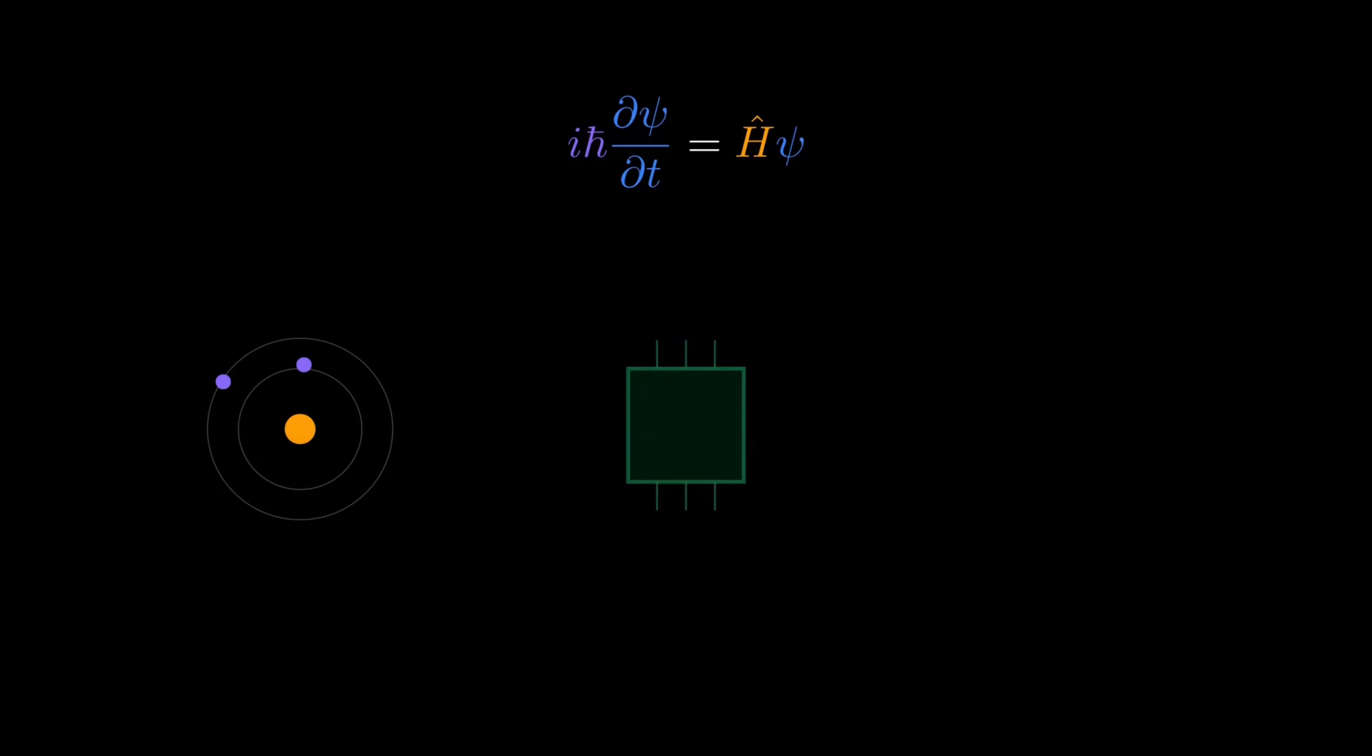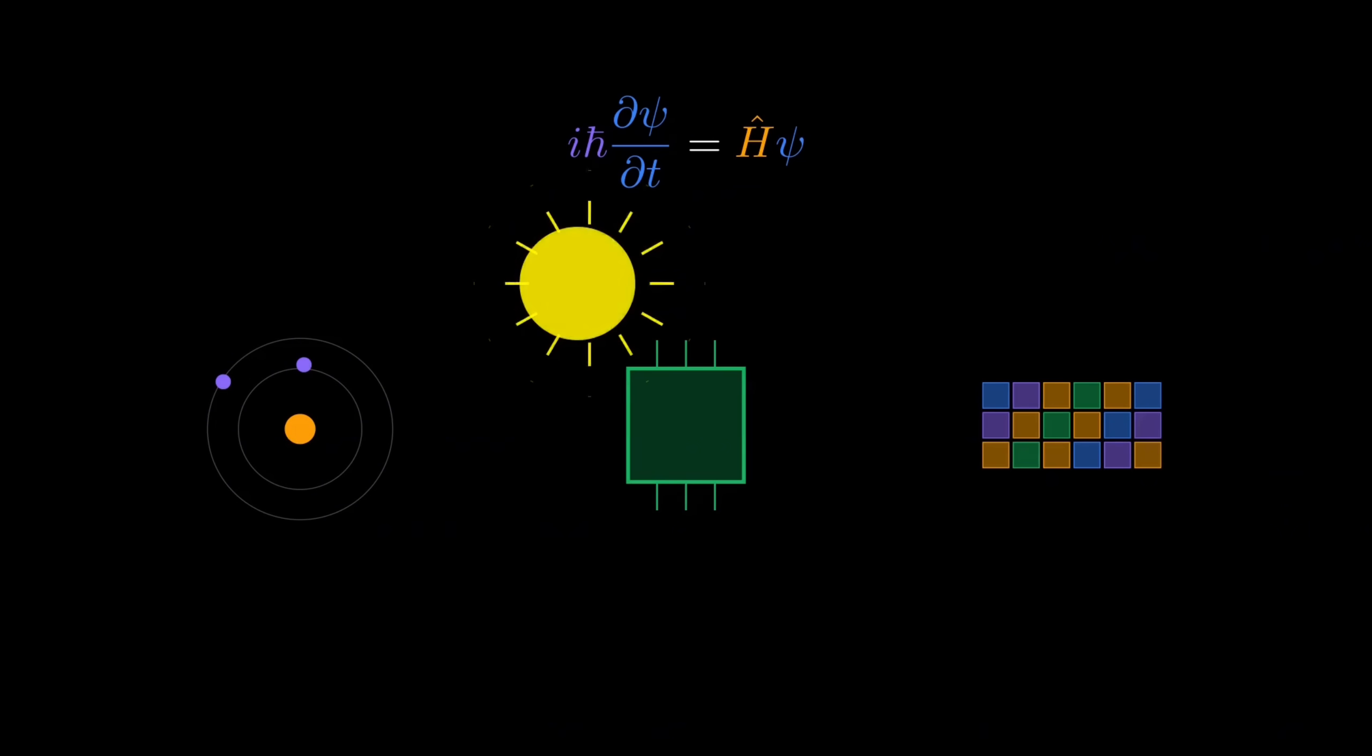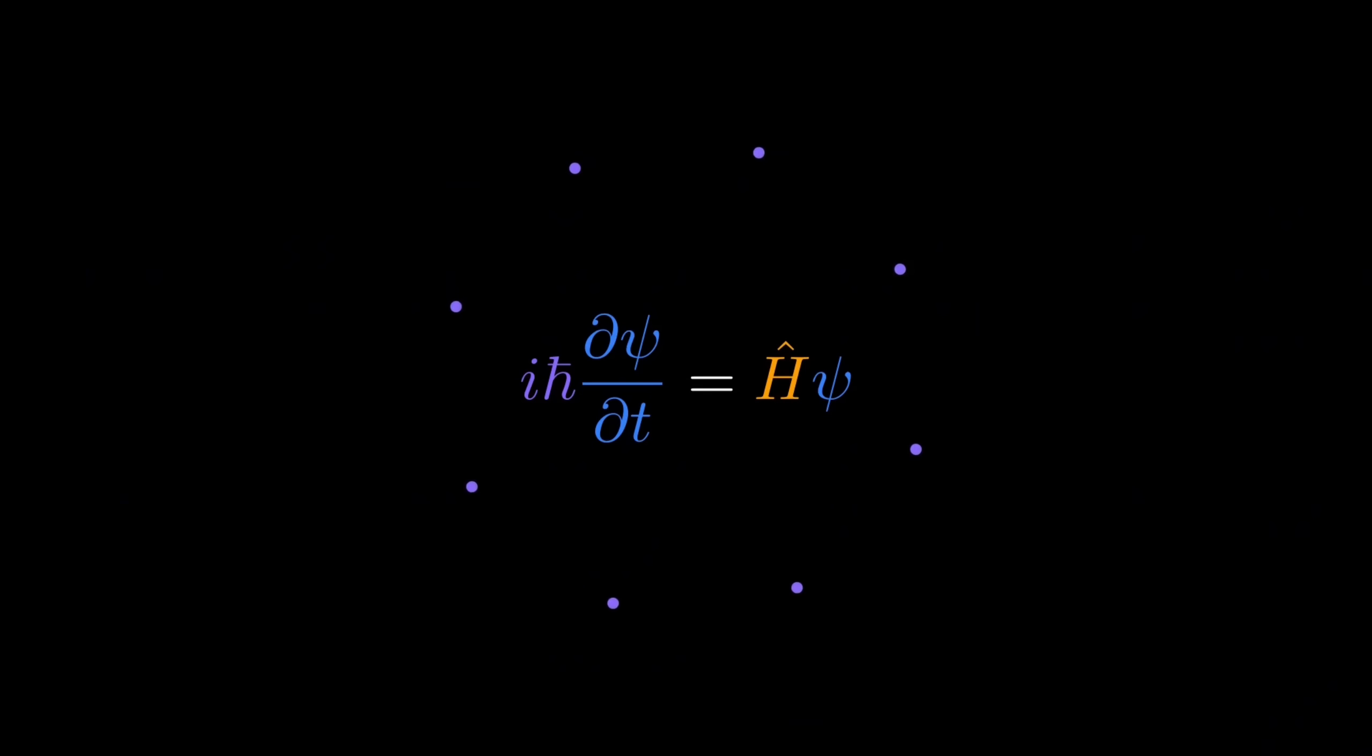In 1926, a physicist named Erwin Schrödinger wrote down an equation that would change our understanding of reality forever. This single equation explains why atoms are stable, how semiconductors work, why the periodic table has the structure it does, and even how the sun generates energy. It's the foundation of quantum mechanics, and today we're going to understand exactly what it means.